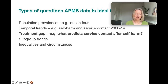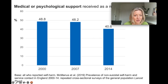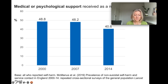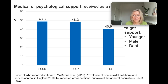Another area the survey series is really good for is looking at the treatment gap. If we rely only on data from those in contact with health services, it tells us nothing about those not in contact with services. Looking at the data, of those who reported having self-harmed, around half said they had not received either medical or psychological support — and we saw no evidence of that gap improving over time. Certain groups were particularly unlikely to get support after self-harm: younger people, men, and those in debt. There are real socioeconomic and demographic inequalities in treatment access, and the APMS data is ideal for looking at that.